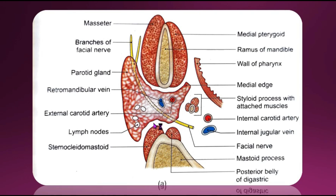Now let's look at the relations of the parotid gland, shown in a horizontal section through the gland. The apex, directed downward, overlaps the posterior belly of the digastric muscle and the adjoining part of the carotid triangle. The cervical branch of the facial nerve and the two divisions of the retromandibular vein emerge near the apex.